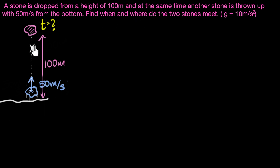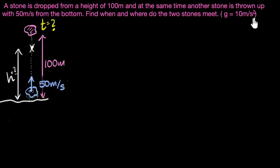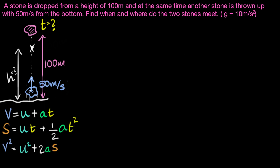We also need to figure out where they meet — what height that point is. We can calculate the distance from the bottom, let's call it H. Since falling objects have constant acceleration and obey the three equations of motion, we can use these equations for both stones to calculate H and T.